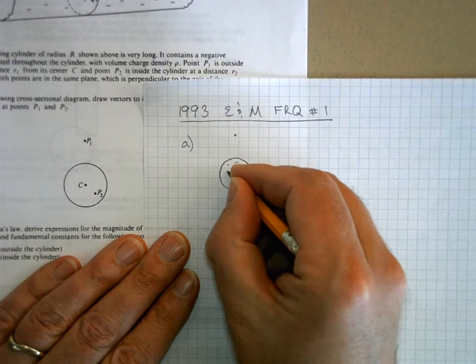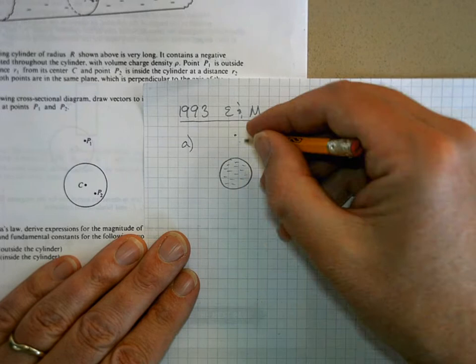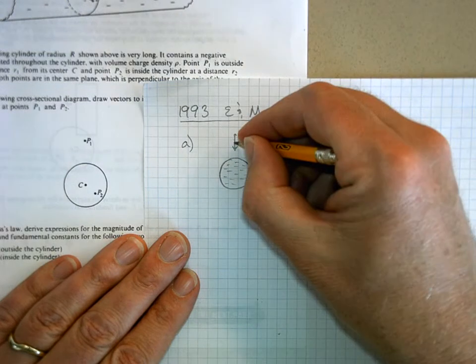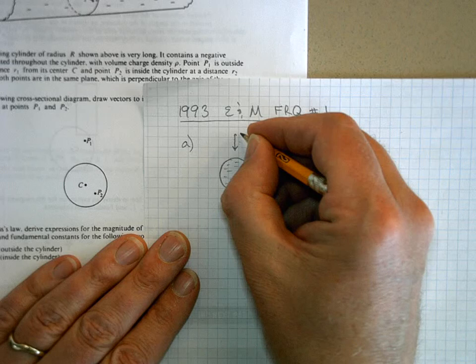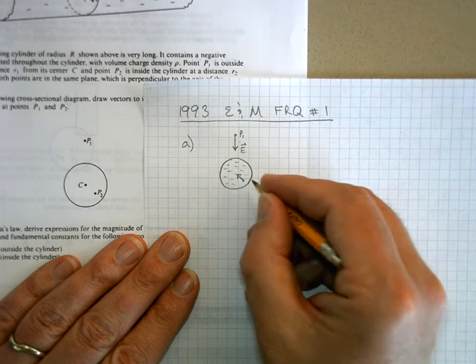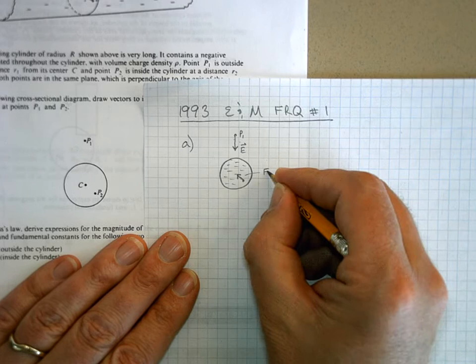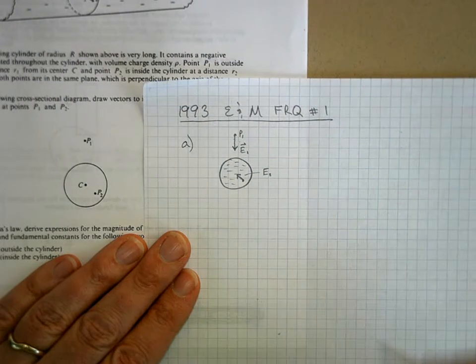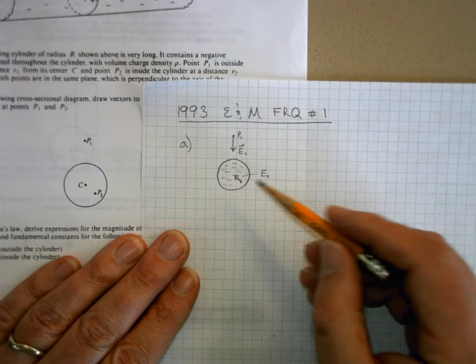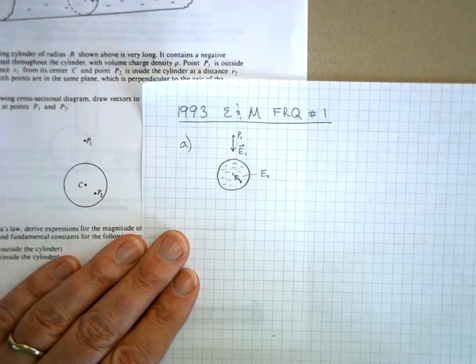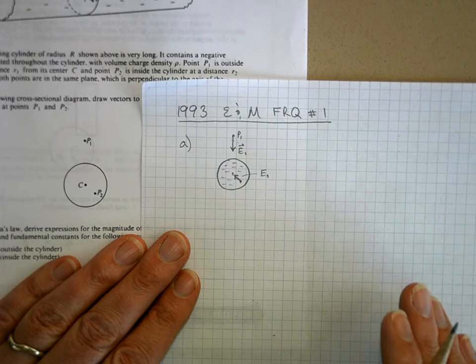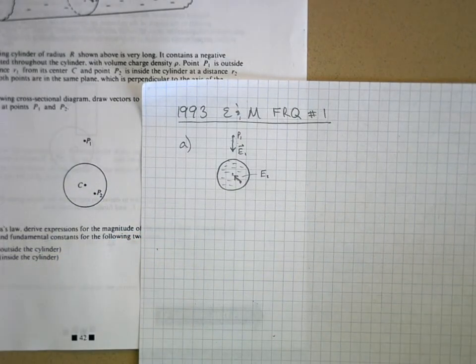And so here's our cross-section. Here's P1. Now the key here is that this is negatively charged. And so if you put a little positive test charge right there, it's going to be attracted to it. And then P2, this is P1. So here's the electric field there. And then here the electric field is going to be towards the center. Because now, that's E2. I'll call this E1. Now, this one's going to be a little... I don't know.